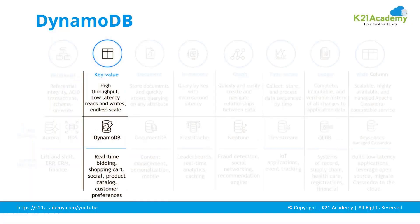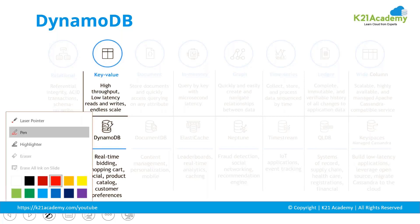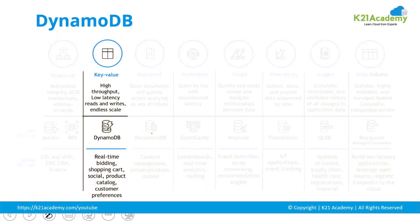Let's take up the database service which is DynamoDB. Another type of database that we have is a key-value database. In a key-value database, Amazon basically gives you the ability to create a database where you can have latency in single-digit milliseconds.